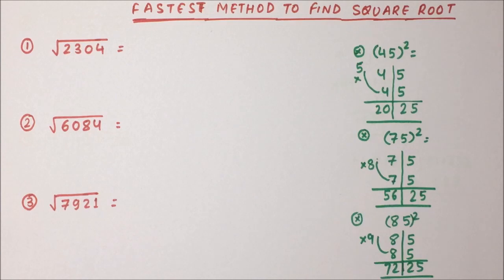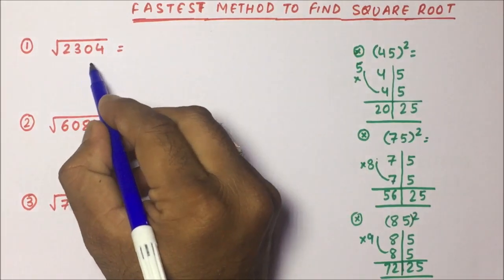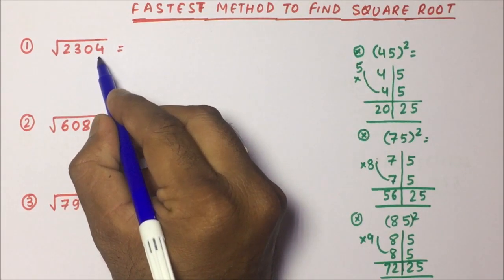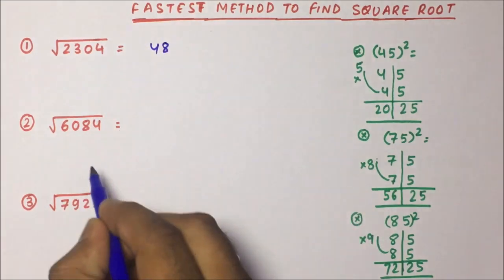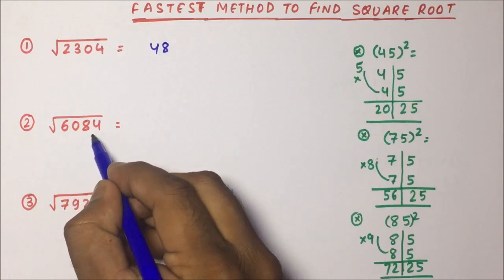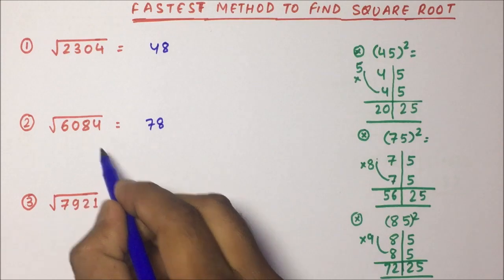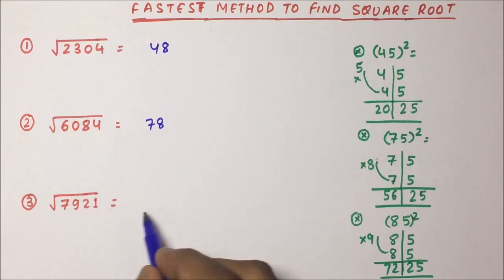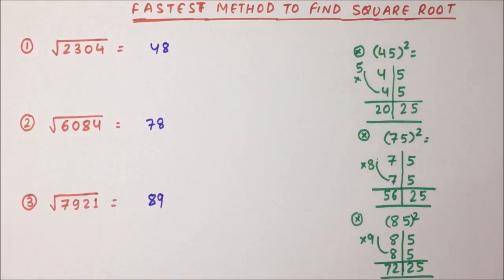Let us start with question number one. Friends, you have to find out the square root of 2304. So 45 and then 48 — the square root of this will be 48. And if you see 75 and then 78, because 8 squared gives you 4 at the end, this square root will be nothing but 89. So we are really able to calculate the square root in a fraction of a second.